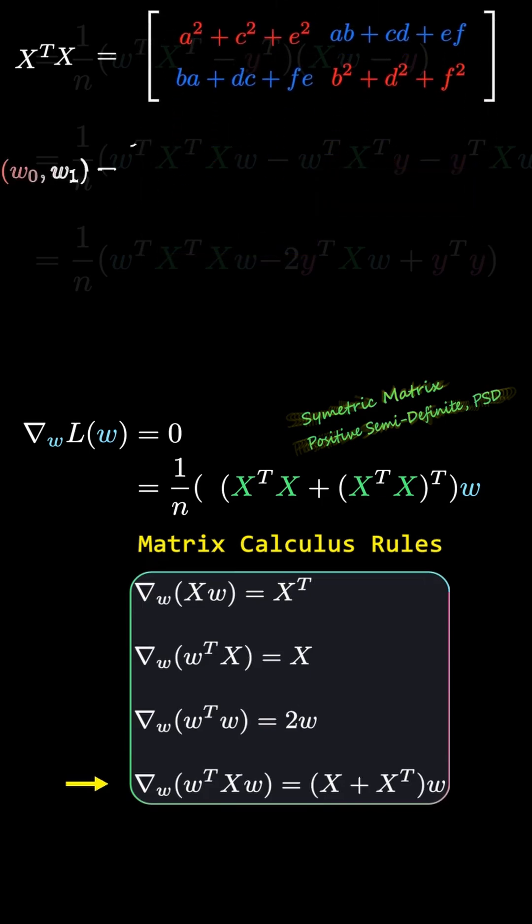Now, positive semi-definite basically means that the coefficient of the squared term in a quadratic expression is positive. In other words, no matter which direction W moves, the surface of L of W curves upward. It's convex, just like we saw earlier.